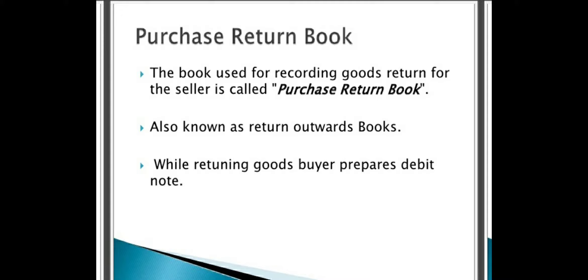The third subsidiary book is the purchase return book. Business organizations may purchase goods or raw material, but sometimes they don't like them — the quality may be different, the price may be different, or they may receive damaged goods. Whatever the reason, according to agreement they can return those goods. All those returned goods will be recorded in a separate book called the purchase return book. When we purchase goods we record in the purchase book; when we return those same purchased goods we write in the purchase return book. It is also known as the returns outward book, because the goods are going out.